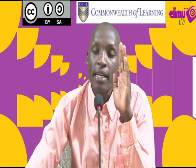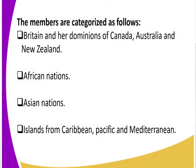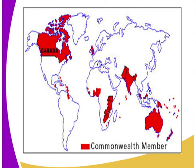The members are categorized into four categories: first, Britain and her dominions — for example, Canada, Australia, and New Zealand; second, the African nations; third, the Asian nations; and fourth, the islands of the Caribbean, Pacific, and Mediterranean. Looking at the map, those shown in red are the Commonwealth members. In Africa we have Kenya, Uganda, Egypt, Nigeria, and in West Africa, Cameroon and Togo. You can also see Canada and the Caribbean islands.